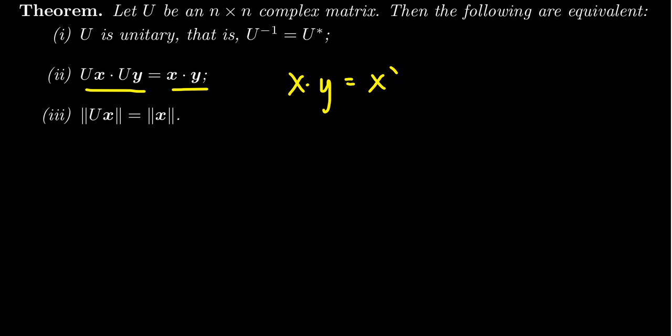And then lastly, the third condition is that the length of the vector Ux is equal to length of x for any vector x. Which is a reminder, the length of the vector means the square root of x dot x.